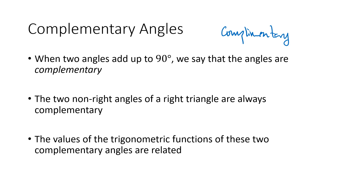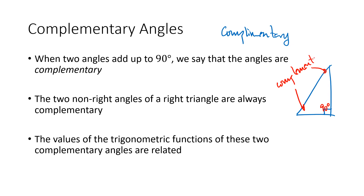That's relevant for us because when we have a right triangle, we know that the three angles of a triangle add up to 180 degrees. When we already have one angle measuring 90 degrees, that means the other two angles are going to be complementary — they have to add up to 90 to make the whole triangle add up to 180.